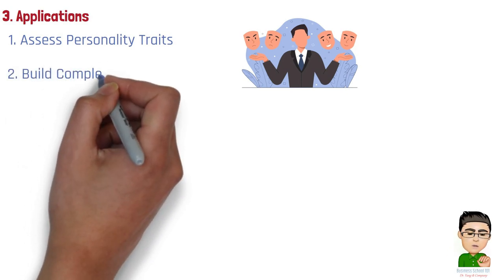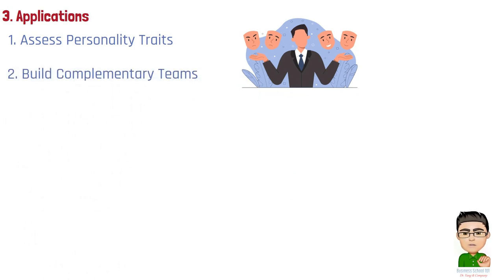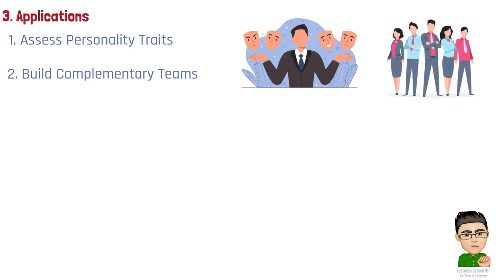Number 2. Build complementary teams. Consider the personality traits of team members when forming groups. Strive for a balance of different traits within the team to ensure diverse perspectives and skills. For example, a team requiring creativity and innovation may benefit from having members with higher openness to experience.